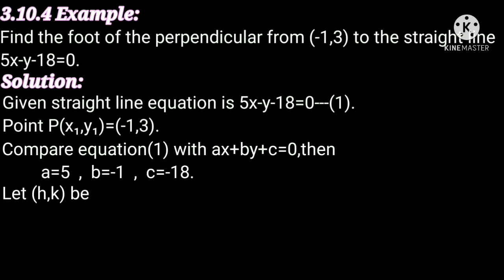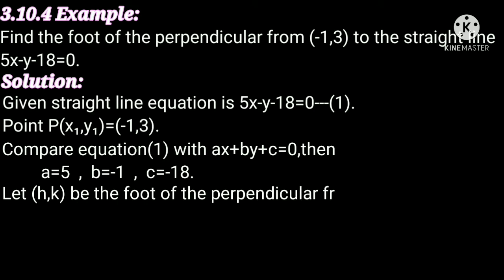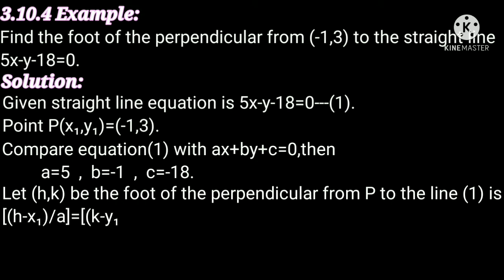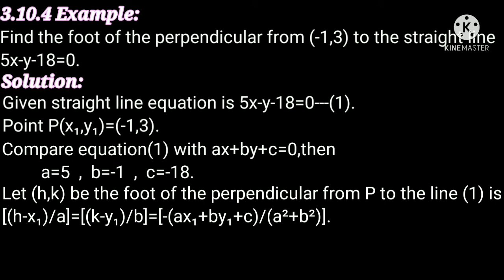Let (h, k) be the foot of the perpendicular from P to line 1. Then the condition is: (h minus x₁) divided by a equals (k minus y₁) divided by b equals minus of (ax₁ plus by₁ plus c) divided by (a² plus b²).